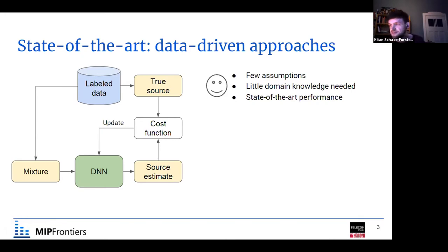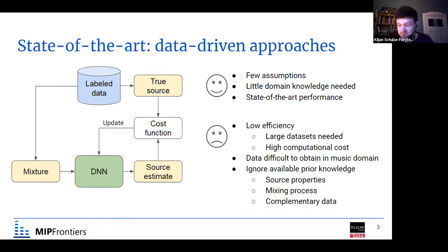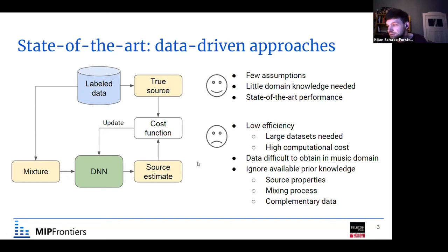There are some things that are really great about this procedure. First of all, we need to make very few assumptions, so the risk of breaking any assumptions is also quite low. In general, we need very little domain knowledge to do the task, because we try to explain everything by the data. We can get really good performance with that. However, these methods are quite inefficient — one inefficiency is regarding the data, as we really need huge amounts of such datasets to get the performance, and they are computationally quite expensive.